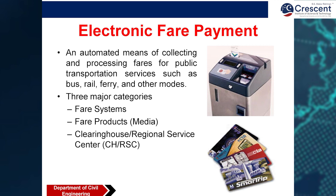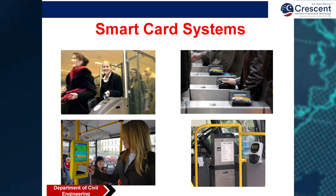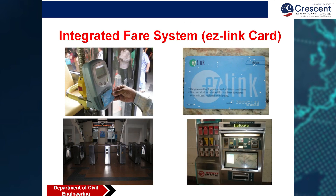Electronic fare payment is used in our smart metro rail system, where you show your electronic card and are let in. This can be used in many places, and you can also have multimodal transport electronic fare payment with cards — the same card can be used in the bus, rail, ferry, and other modes. There are three major categories: fare system, fare product, and a clearing house or regional service center. This smart card system allows passengers to tap their card and enter the station or bus.